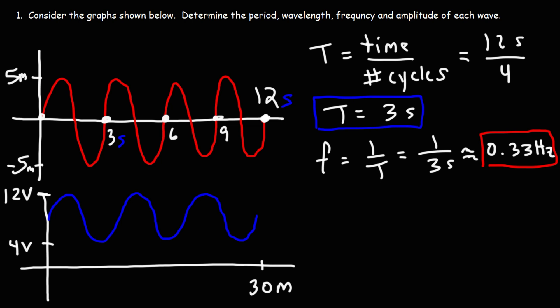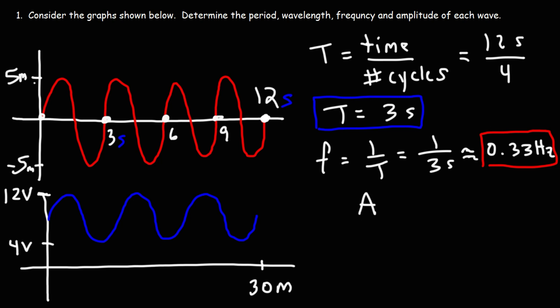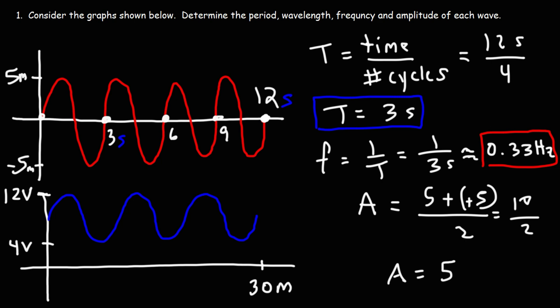For the red wave, we can't find the wavelength because the x-axis shows time, not distance. When you see units like meters or feet on the y-axis, it's a displacement wave. The amplitude is 5 — that's the max (5) minus the minimum (-5), divided by two: (5 - (-5)) / 2 = 10/2 = 5. So the displacement amplitude is 5 meters.